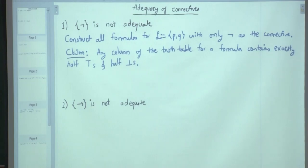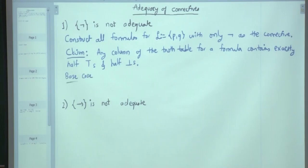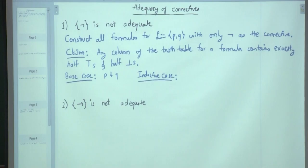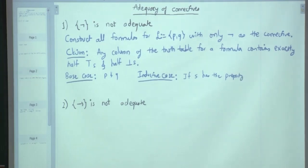P and Q — only the variables. And how many entries are there in a column? Four, because there are 2 variables, so 2 to the power 2 is 4. Base case is P and Q. The inductive case is: how do you generate a more complex formula from an existing one? Just negation. So inductive case is: if S has the property (the property mentioned in the claim), then so does negation S, and that is all.